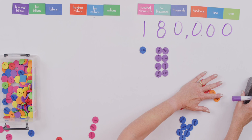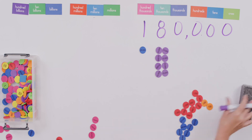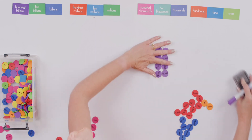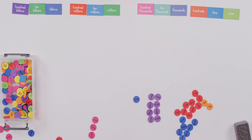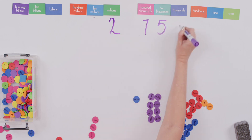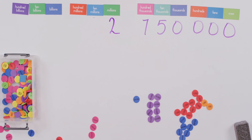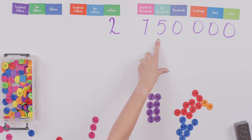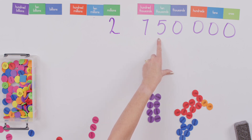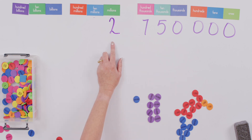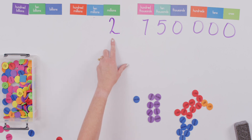Great job, you guys! Now let's round this number. Let's take 2,750,000. We're going to round to the 10,000s place. If we look next door, it already looks like it's rounded to the 10,000s place, doesn't it? What would this number look like if I rounded to the millions? If we rounded to the millions, we would round that up to three — you would get 3 million.